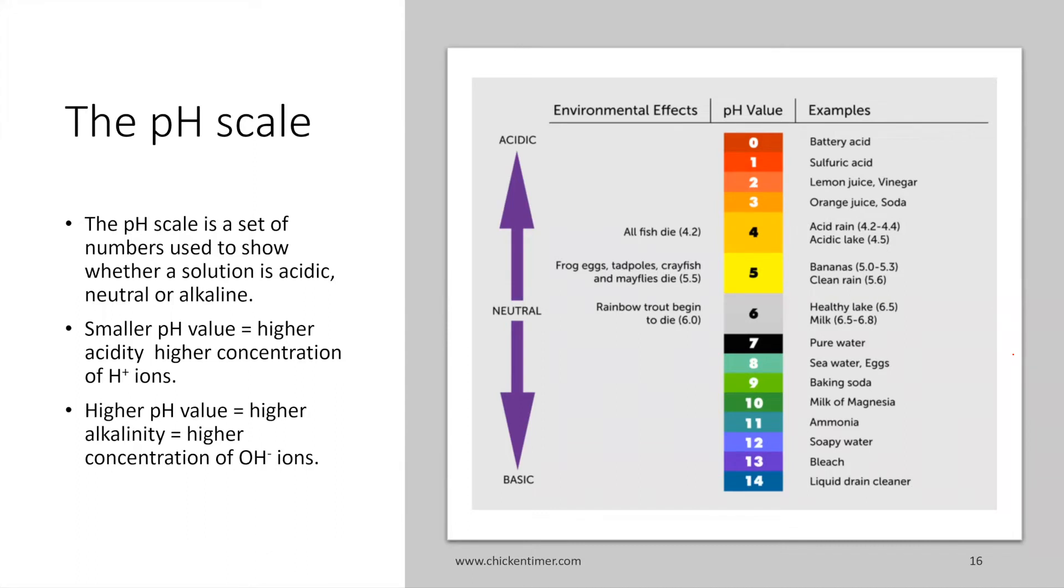The pH value starts from 0 to 14. Seven is neutral, just this point. Then 0 to 6 is acidic, and from 8 to 14 is basic or alkaline.